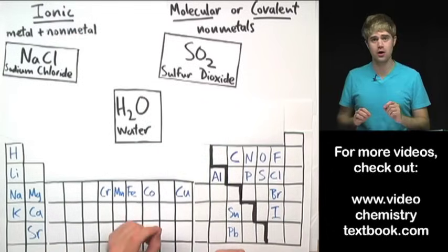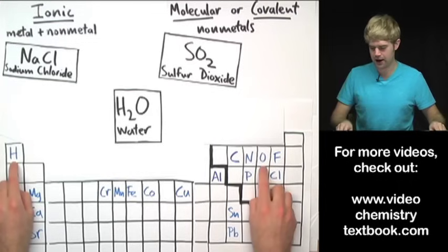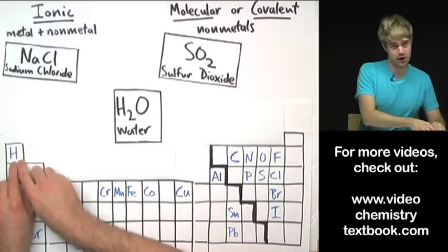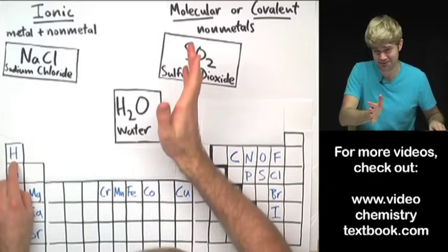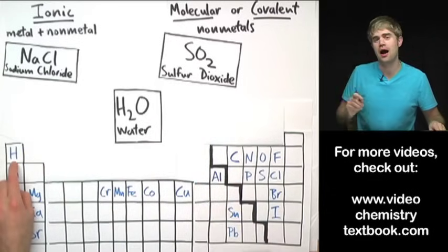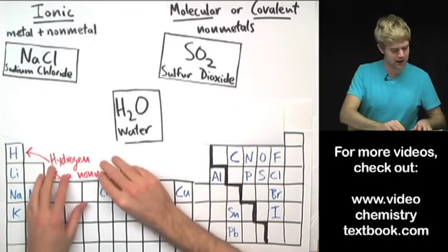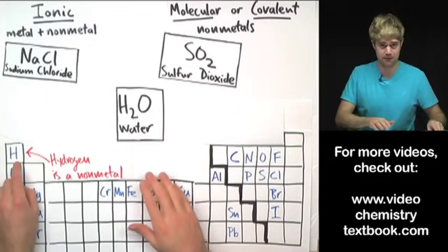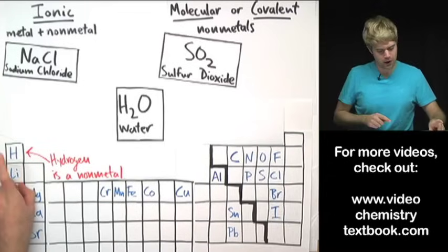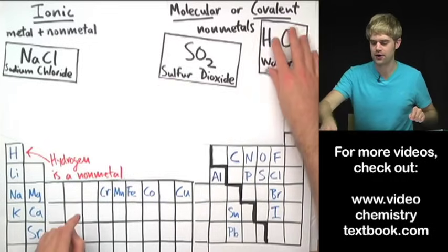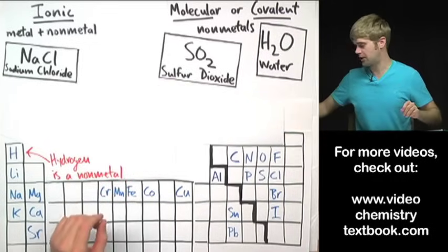Now H2O is made of hydrogen and oxygen. You might think that hydrogen is a metal because it's on this side of the periodic table. It's understandable if you do that, but hydrogen is an exception. Even though it's on this side of the periodic table, it's actually a non-metal. It's the only exception. So hydrogen and oxygen are actually both non-metals, which means that H2O, water, is a molecular or covalent compound.